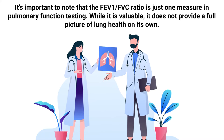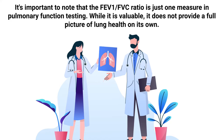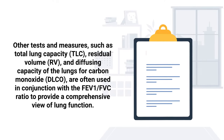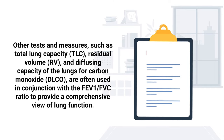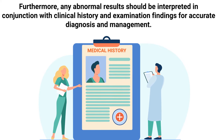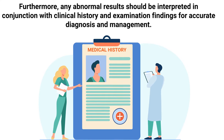It's important to note that the FEV1 to FVC ratio is just one measure in pulmonary function testing. While it is valuable, it does not provide a full picture of lung health on its own. Other tests and measures, such as total lung capacity, residual volume, and diffusing capacity of the lungs for carbon monoxide, are often used in conjunction with the FEV1 to FVC ratio to provide a comprehensive view of lung function. Furthermore, any abnormal results should be interpreted in conjunction with clinical history and examination findings for accurate diagnosis and management.